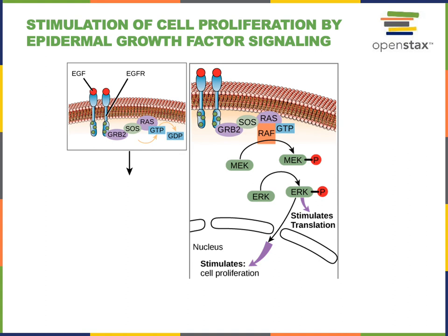Another example of an intercellular signal is epidermal growth factor. The epidermis is the superficial layer of the skin — an epithelial tissue that forms that superficial layer, a tissue formed from many cells tightly packed together forming a sheet of cells. Epidermal growth factor is an intercellular signal, a growth factor that will stimulate mitotic cell division or cell proliferation in order to stimulate tissue growth.